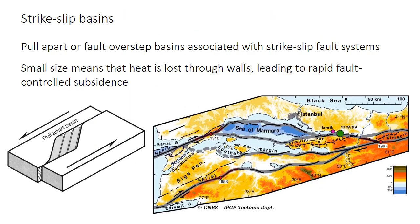Finally, we'll discuss strike-slip basins briefly. These are typically small basins that may develop along releasing bends in strike-slip faults — called pull-apart basins — or where there are gaps between closely spaced strike-slip faults, called fault overstep basins. In the block diagram on the left, it shows a pull-apart basin with a left-lateral strike-slip fault; the bend tends to open up a small gap as the fault moves, creating a lozenge or trapezoid-shaped basin. The San Andreas Fault is well known for creating numerous pull-apart and fault overstep basins. In Turkey, the Sea of Marmara is one of these fault overstep basins along the North Anatolian Fault. Strike-slip basins often contain non-marine sediments, but they can develop marine conditions as seen in the Sea of Marmara.